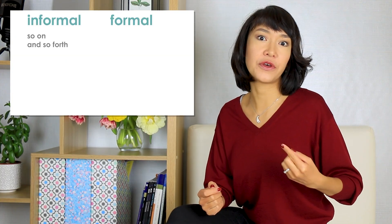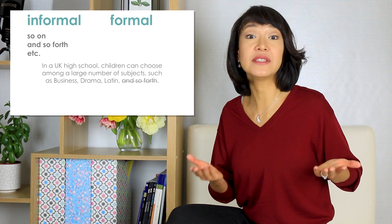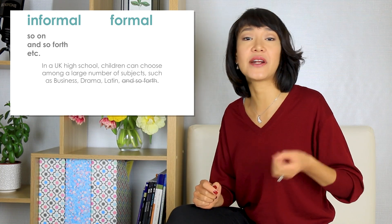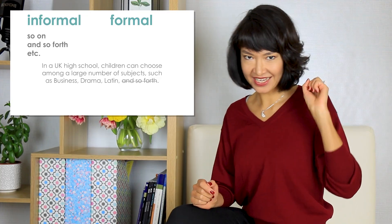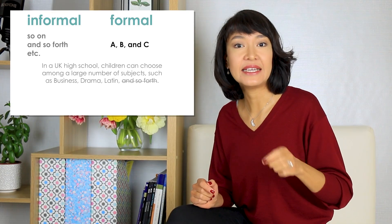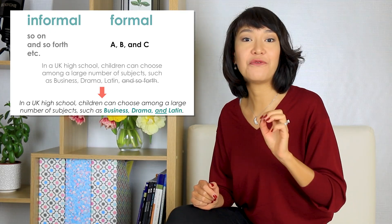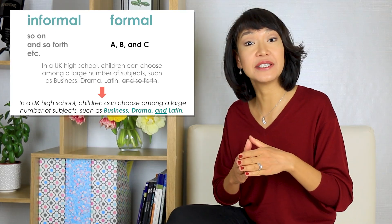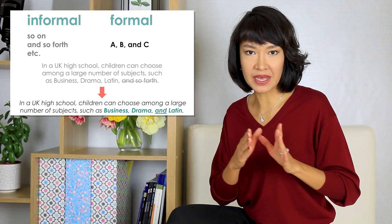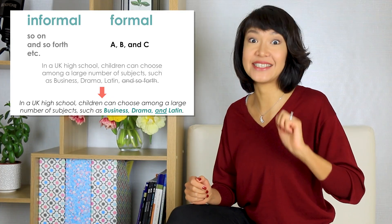When you're giving a list of several things, avoid finishing with so on and so forth or etc. In a UK high school, children can choose among a large number of subjects such as business, drama, Latin and so forth. Instead of so forth, use this formula: A, B and C — business, drama and Latin. Full stop. And don't forget AND before the last item to show that you've finished your list. If you just say business, drama, Latin — full stop — your sentence will sound unfinished.